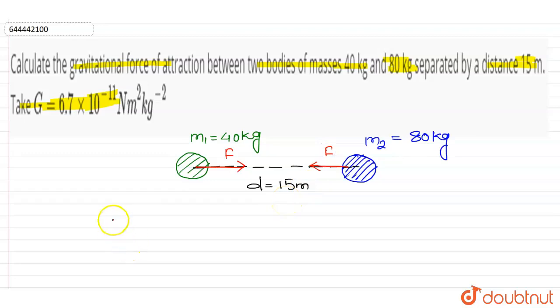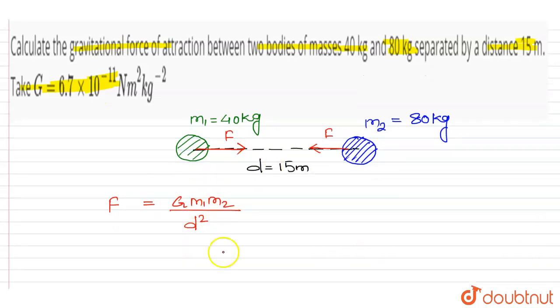According to universal law of gravitation, gravitational force F is equal to G m1 m2 upon r square, means d square. Here G is the universal gravitational constant, m1 m2 are the masses, and d is the separation. Now put the values here.